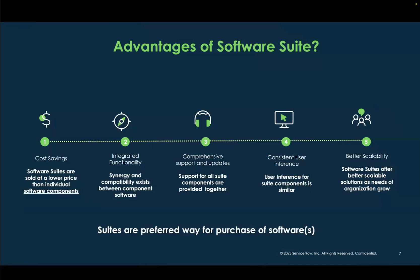What are the advantages? Why do organizations buy software suites? First of all, cost savings — software suites are sold at a lower price than individual software components. They offer integrated functionality and comprehensive support; publishers like Microsoft provide comprehensive support for the suite as a whole product. They also provide a consistent user interface and better scalability, hence suites are a preferred way for purchase of many enterprise-level softwares.